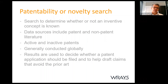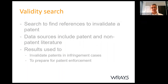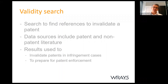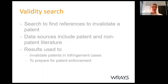With that information you can assess how different your product is from ones that have gone before. A validity search is similar to a novelty search but conducted from the other side — when you've identified a competitor's patent that's a potential barrier to entry. You may want to try to knock that patent out. If you're sued for patent infringement, your defense is twofold: you don't infringe, and the patent isn't valid. To invalidate it, you need prior documents that already show what that patent claims.